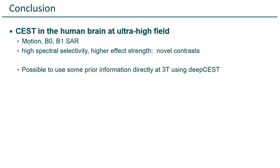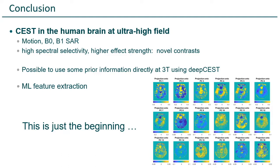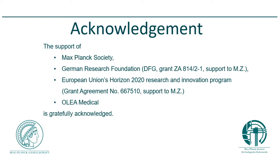Overall conclusion: the human brain at ultra-high field CEST scans looks really nice, but you first have to care about motion, B0, B1, and SAR. Then you get really high spectral selectivity, higher effect sizes, and novel contrasts as discussed in the clinical conclusions. It's possible to use some of this prior information directly at 3T using DeepCEST or other approaches. Looking at machine learning feature extraction, I think this is just the beginning — there are many more things to explore at ultra-high fields. We can also use machine learning at ultra-high fields to go to even more selectivity, and we try to transfer as much information back to 3T. Thanks to all my collaborators and for your attention.